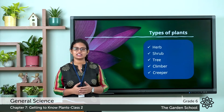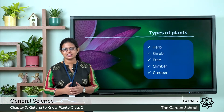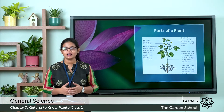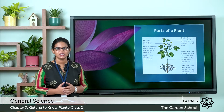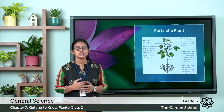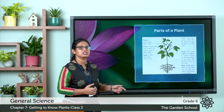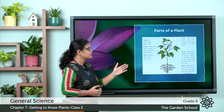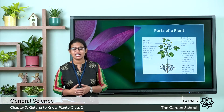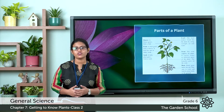Today we are going to discuss the parts of a plant and in that we are going to discuss the root system. So which are the different parts of a plant? Root, stem, leaves, flowers and fruits — and all these different parts have their own functions.